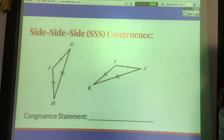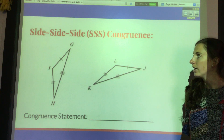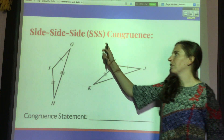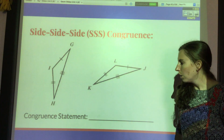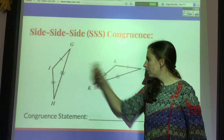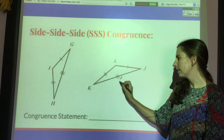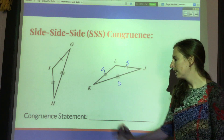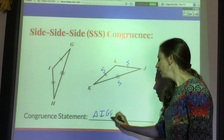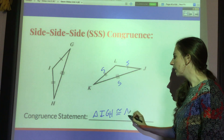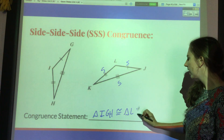We also have side-side-side. Again, different from the similarity stuff — the sides all have to be congruent, not just proportional. We've got three pairs of congruent sides; that's side-side-side. So triangle IGH is congruent to triangle LJK, making sure that each vertex matches up.